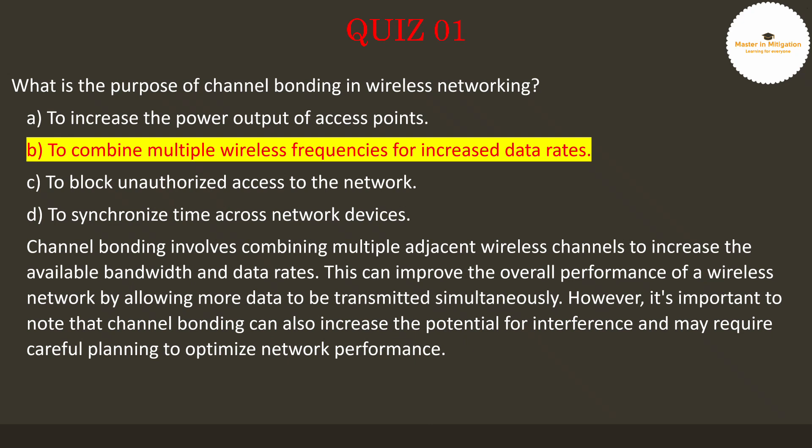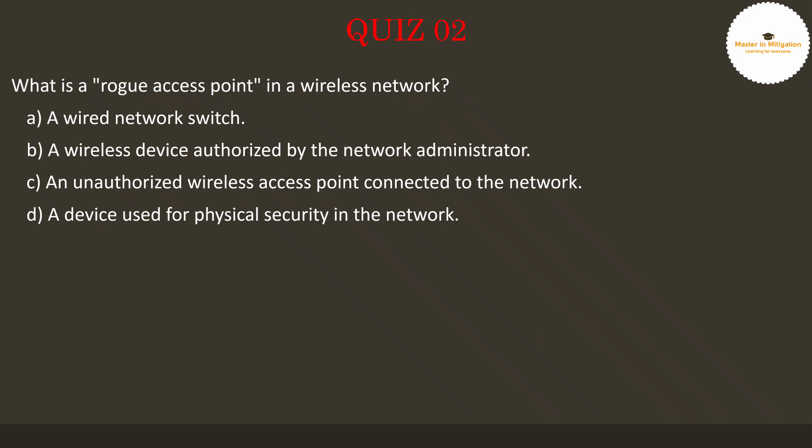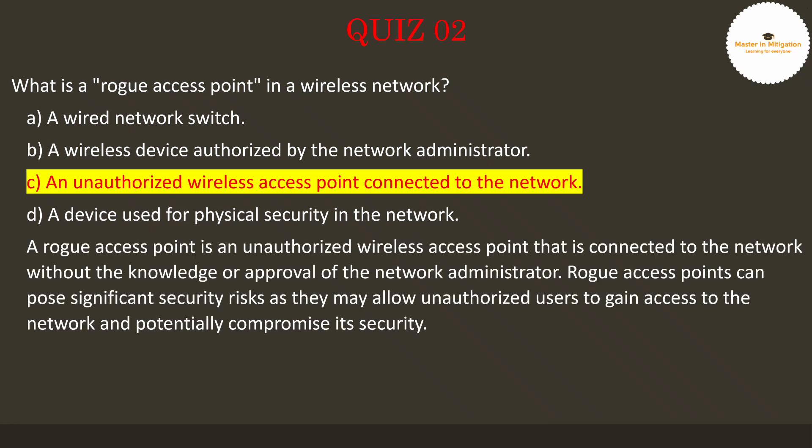Let's proceed to the next question. Question 2: What is a rogue access point in a wireless network? Pause the video now to select the best answer. The answer is C: an unauthorized wireless access point connected to the network. A rogue access point is an unauthorized wireless access point that is connected to the network without the knowledge or approval of the network administrator. Rogue access points can pose significant security risks as they may allow unauthorized users to gain access to the network and potentially compromise its security.